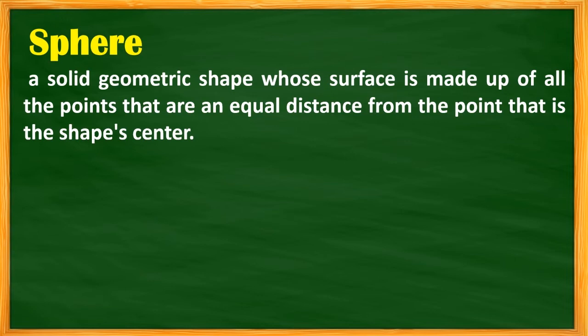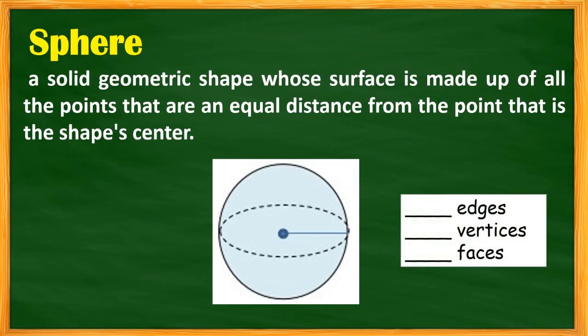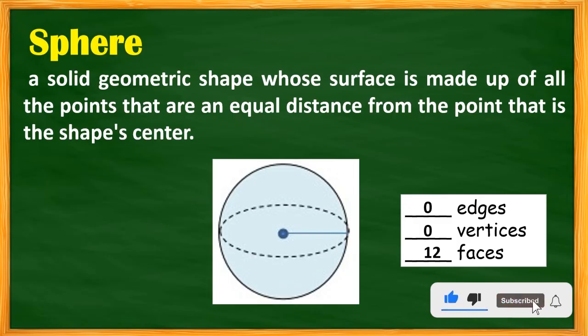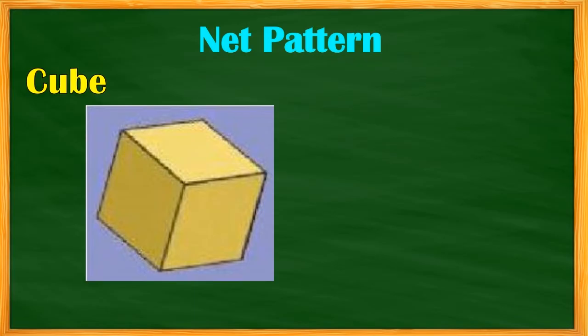A sphere is a solid geometric shape whose surface is made up of all points that are an equal distance from the center. Here is the illustration of the sphere. It has zero edges, zero vertices, and 12 faces, which is the generally accepted number used for this lesson, though some sources use 8.